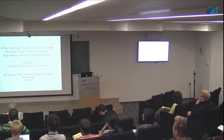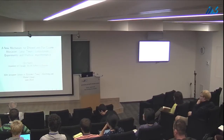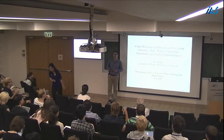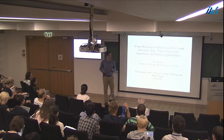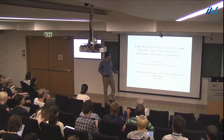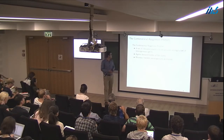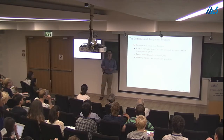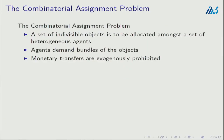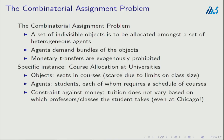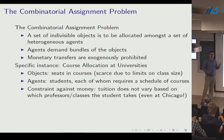This talk is about a series of papers that attempts to develop a solution to a well-known open problem in market design called combinatorial assignment. The ingredients of a combinatorial assignment problem are: a set of indivisible objects to be allocated amongst a set of agents with heterogeneous preferences, where agents' preferences are defined over bundles of the objects, and there's an exogenous constraint against the use of monetary transfers.